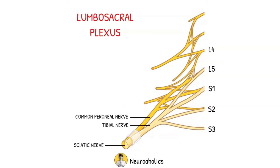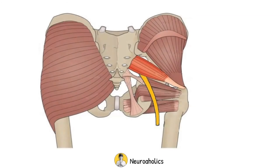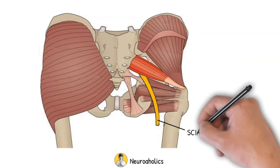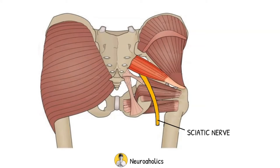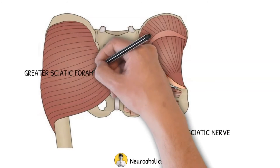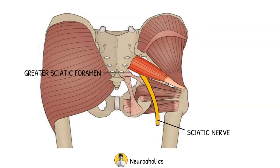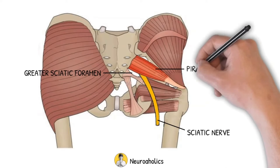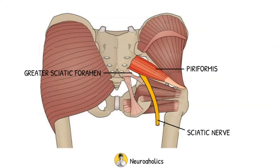After its formation, it leaves the pelvis and enters the gluteal region via the greater sciatic foramen. It emerges inferiorly to the piriformis muscle and descends in an infralateral direction as the nerve moves through the gluteal region.